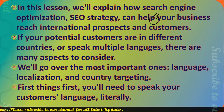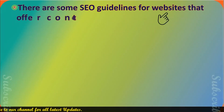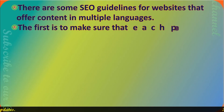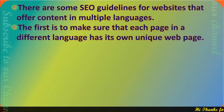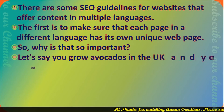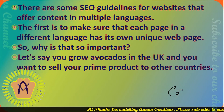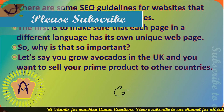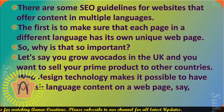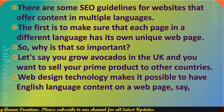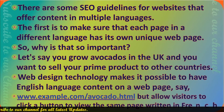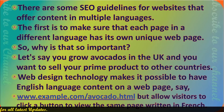First things first — you will need to speak your customers' language, literally. There are SEO guidelines for websites that offer content in multiple languages. The first is to make sure that each page in a different language has its own unique web page. Let's say you grow avocados in the UK and you want to sell your product to other countries as well. Web design technology makes it possible to have English language content on a web page, say www.example.com/avocado.html.